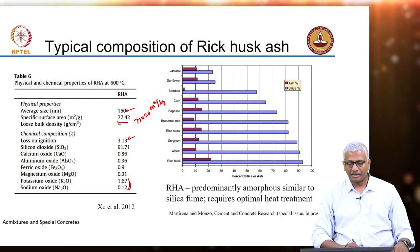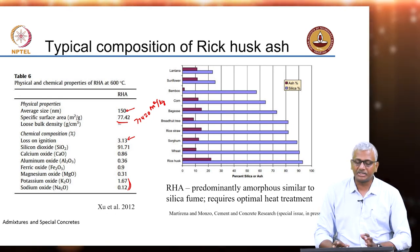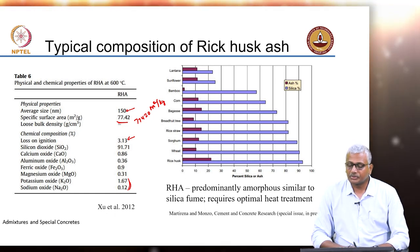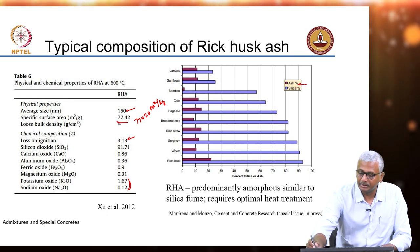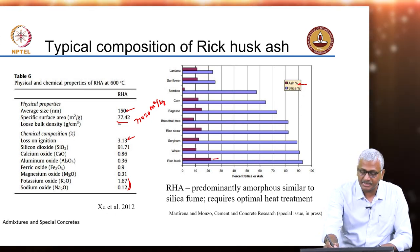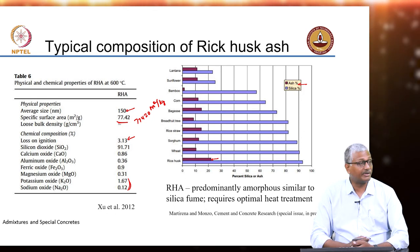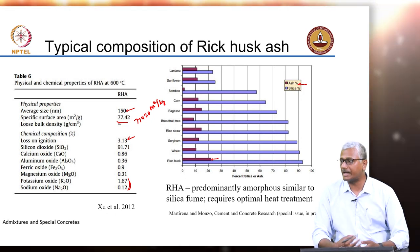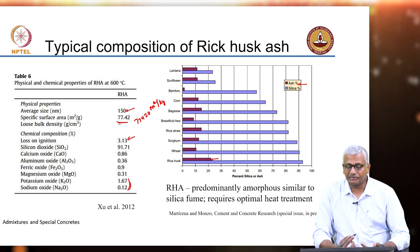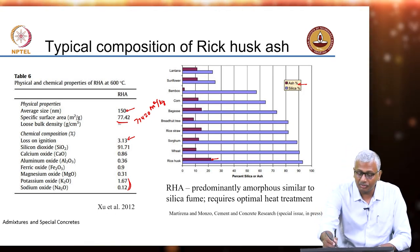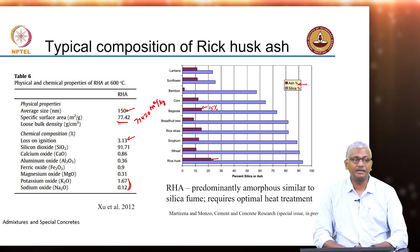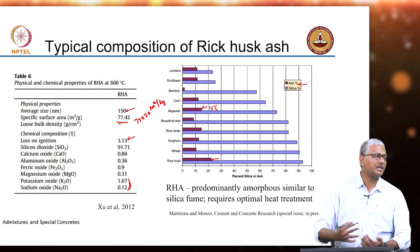If you look at the percent silica or ash depending upon the type of agricultural residue, you can have different levels of ash obtained. Rice husk has possibly one of the largest ash percentages — nearly 25 percent of the rice husk becomes ash — so the potential to use rice husk is significantly large. Wheat straw is only about 10 percent; bagasse is about 15 percent. So depending upon the type of plant being processed to form ash, you get varying quantities of ash.